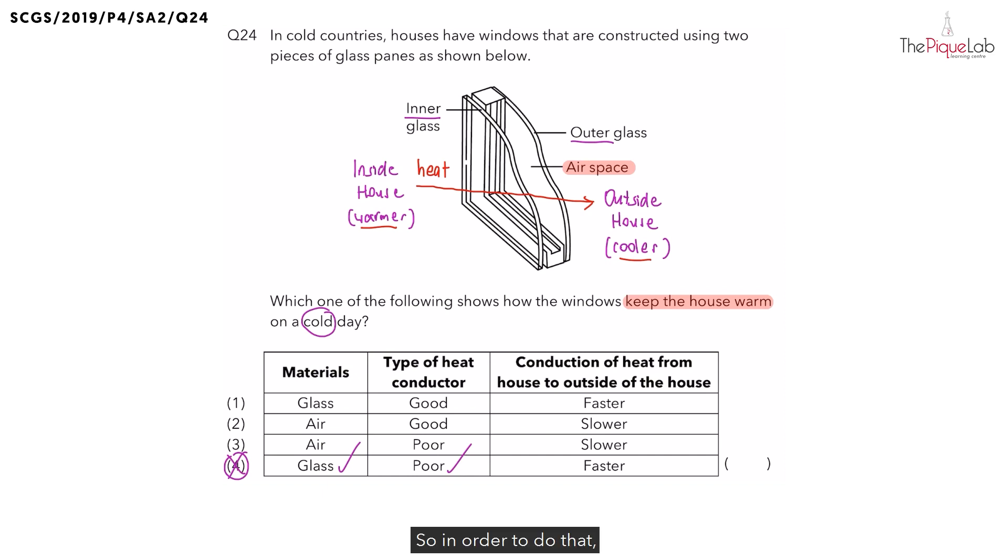In order to do that, must the air conduct the heat from the inside to the outside faster or slower? Yes, we can write down that the air is able to conduct heat slower.